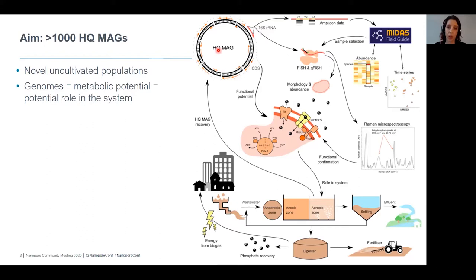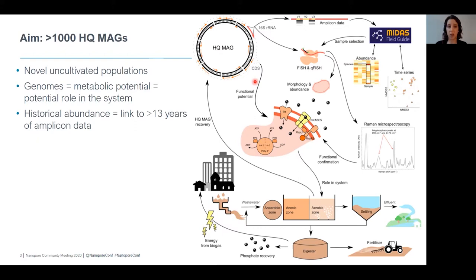We needed the genomes to determine the metabolic potential of these microorganisms and their role in the system — we can call the proteins and see what processes they're undertaking. We're particularly interested in phosphate accumulation genes. We also needed high-quality MAGs with full-length 16S genes to link up to our amplicon data, because we have over 13 years' worth of amplicon data in the MIDAS database with time series abundances. Once linked, we can identify samples with high abundance and use the 16S genes to make FISH probes, and look at what these organisms actually look like under the microscope — their morphology and abundance.